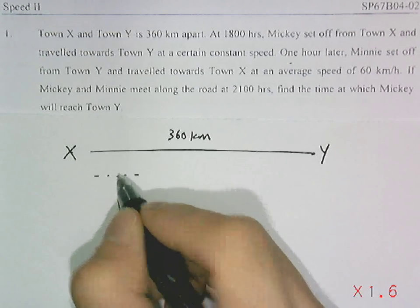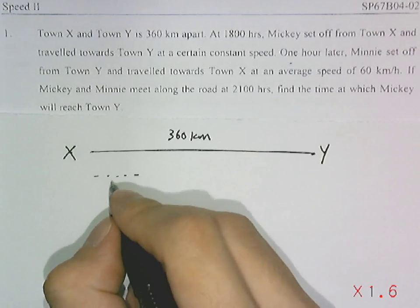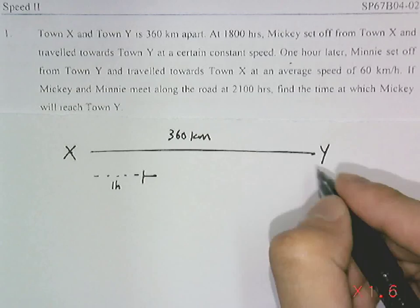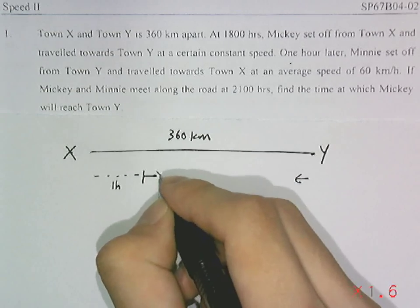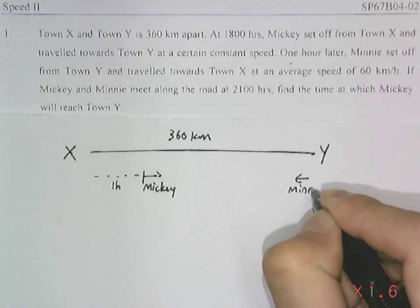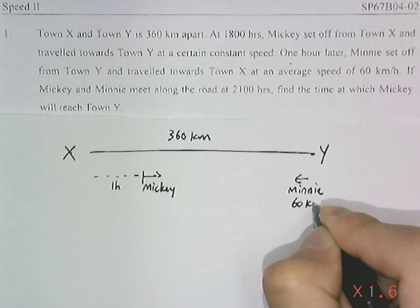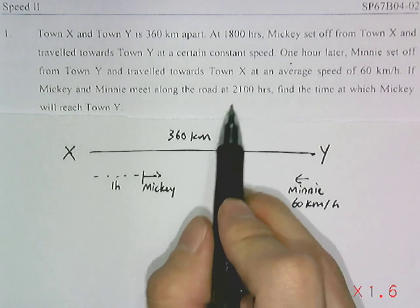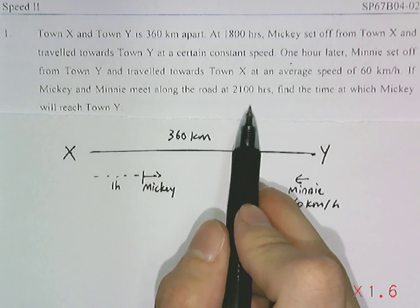Mickey travels for one hour before Minnie starts to travel. Now, Minnie's speed is given, 60 km per hour. We do not know Mickey's speed, but we also know that at 2100 hours, they will meet.